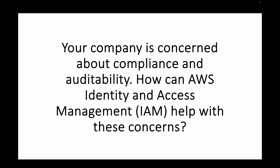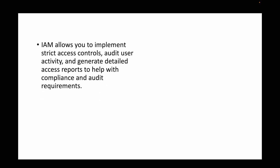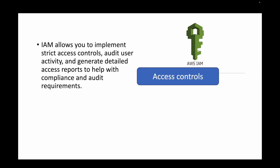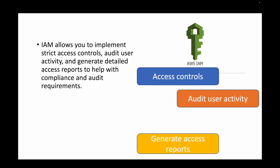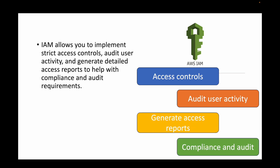The next question is: your company is concerned about the compliance and auditability of your account. How can the IAM service help with these concerns? IAM — Identity and Access Management — can be used to implement strict access controls, defining who can access which services and resources. It also helps audit user activity, generate access reports, and meet compliance and audit requirements. Everything from the user's perspective can be controlled using AWS IAM.